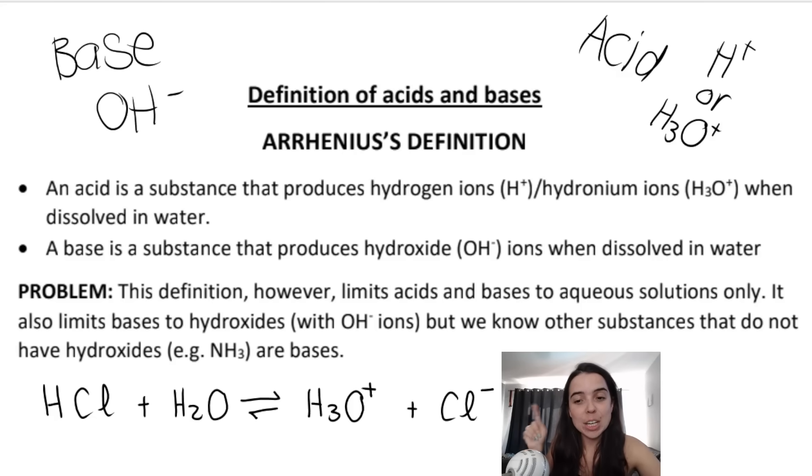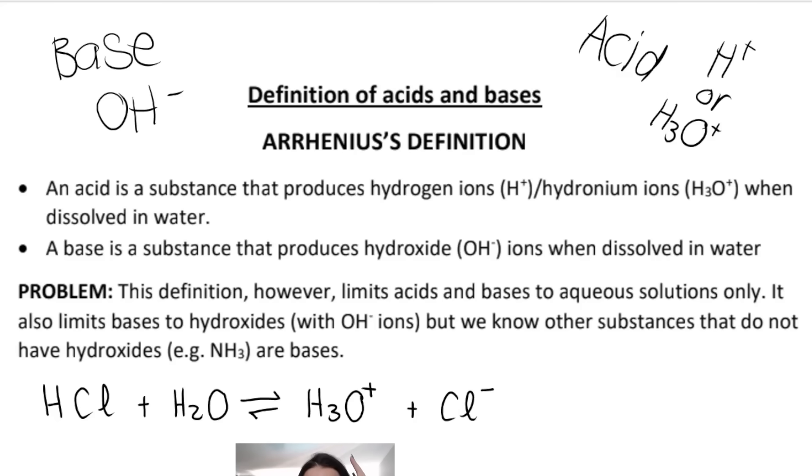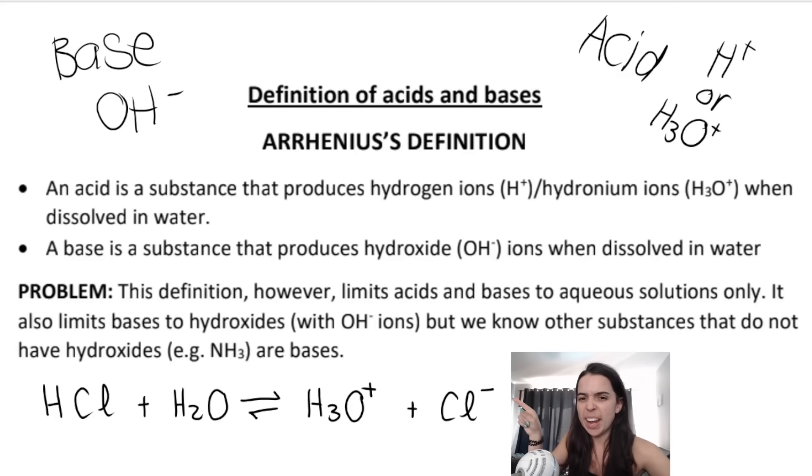Here is a reaction equation showing what happens when an acid, in this case hydrochloric acid, reacts with water and forms hydronium ions, H3O+, as well as a chloride ion. I'll explain how we know it forms these things.